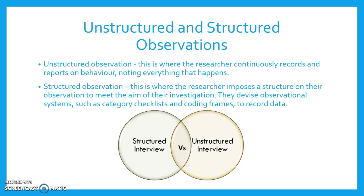Unstructured and structured observations. Unstructured observation is where the researcher continuously records and reports on behaviour, noting everything that happens. Structured observation is where the researcher imposes a structure on their observation to meet the aim of their investigation. They devise observational systems such as category checklists and coding frames to record data.